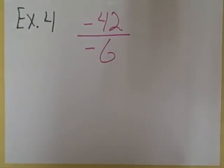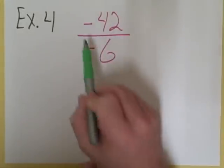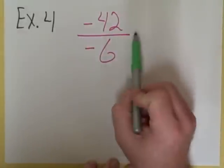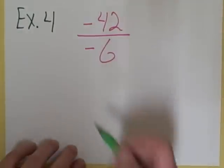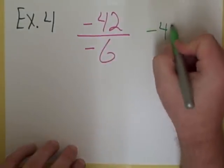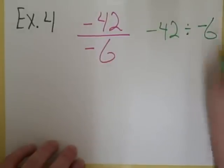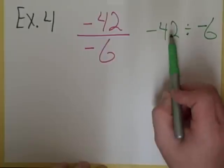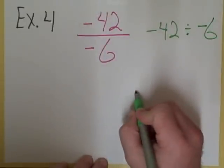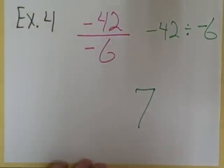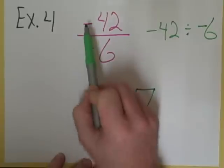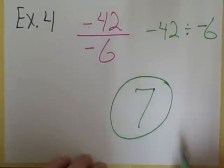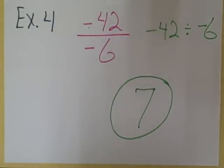Example four is written as a fraction, but a fraction bar is a division bar. So we have negative 42 divided by negative six. We just look at 42 divided by six, which is seven. Look back at your original: both of the signs are negative, so the signs are the same, and the answer is positive. The answer for example four is positive seven.